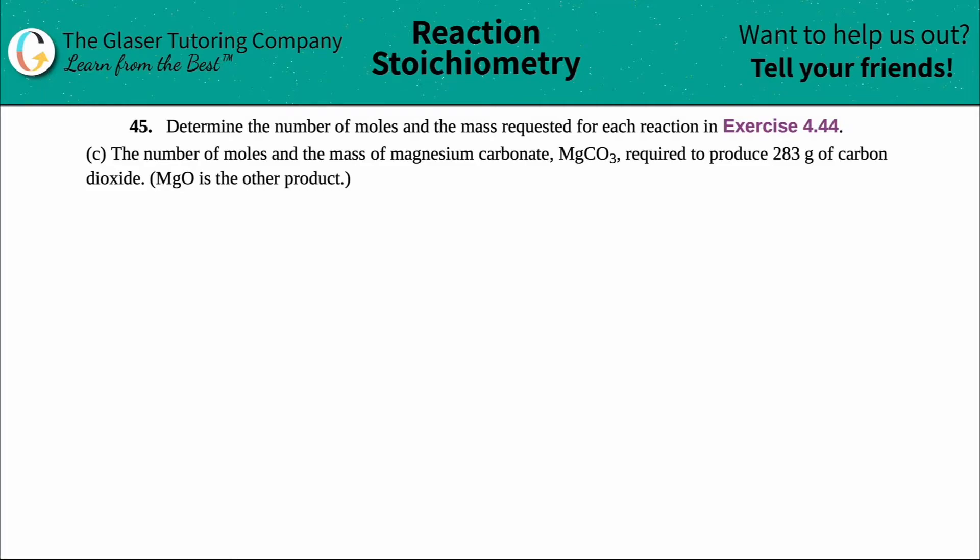Number 45: Determine the number of moles and the mass requested for each reaction in exercise 4.44. We have letter C out of those exercises, so in this case we need to find the number of moles and the mass of magnesium carbonate, MgCO3, required to produce 283 grams of carbon dioxide.